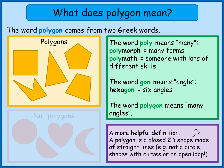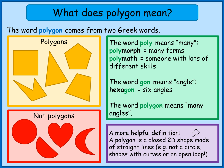Now let's have a look at some shapes that aren't polygons. As I mentioned, the circle has no straight sides at all — that's not a polygon. We've got a semicircle-type shape here with one straight edge but also a curve, so that's definitely not a polygon. There's a love heart shape — completely made out of curves, not a polygon. And this shape here is made up of two circular arcs — that's definitely not a polygon either.